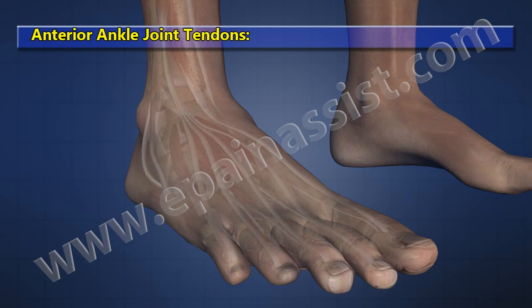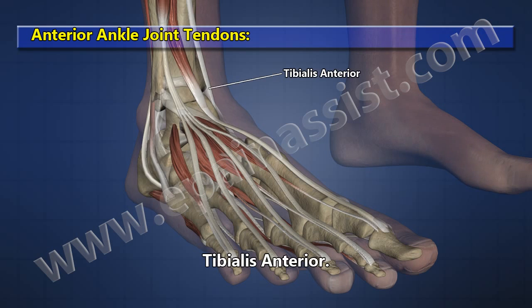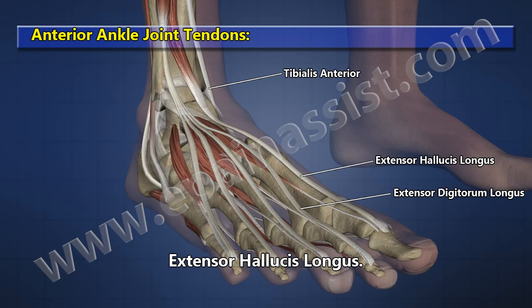Anterior ankle joint tendons include: tibialis anterior, extensor digitorum longus, extensor hallucis longus, and peroneus longus.